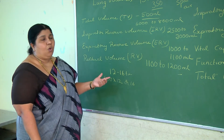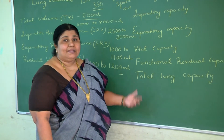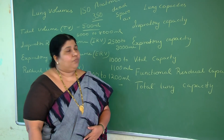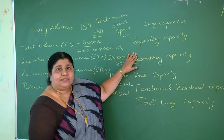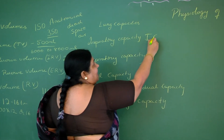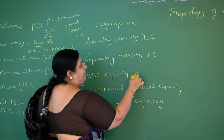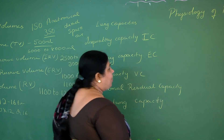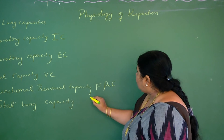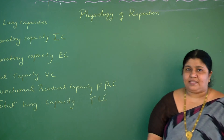By summing up the lung volumes we get the lung capacities. What are the different lung capacities we are going to study? They are: inspiratory capacity (IC), expiratory capacity (EC), vital capacity (VC), functional residual capacity (FRC), and total lung capacity (TLC).